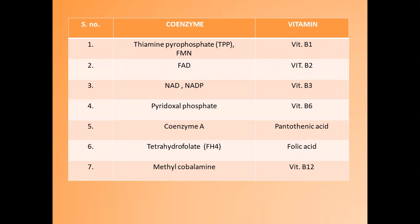Now these are some frequently asked questions about the coenzymes of vitamins. Thiamine pyrophosphate and FMN are coenzymes for vitamin B1. FAD is a coenzyme for vitamin B2. NAD and NADP are coenzymes for vitamin B3. Pyridoxal pyrophosphate is coenzyme for vitamin B6. Coenzyme A is for pantothenic acid. Tetrahydrofolate is for folic acid. And methylcobalamin is for vitamin B12.